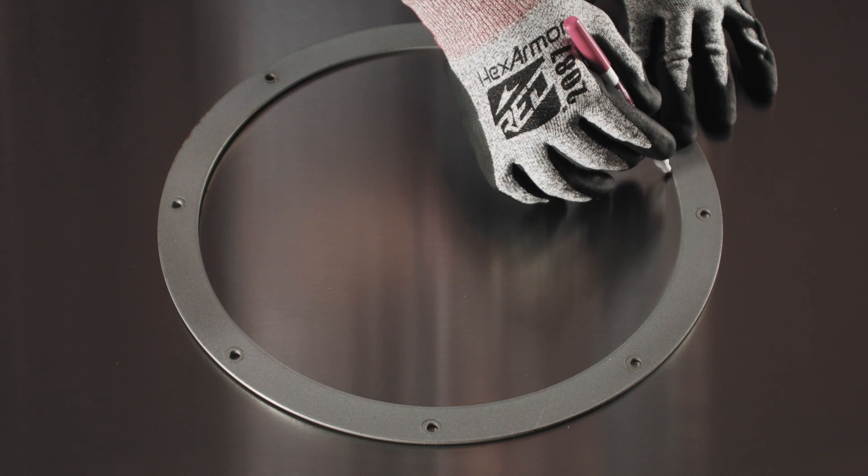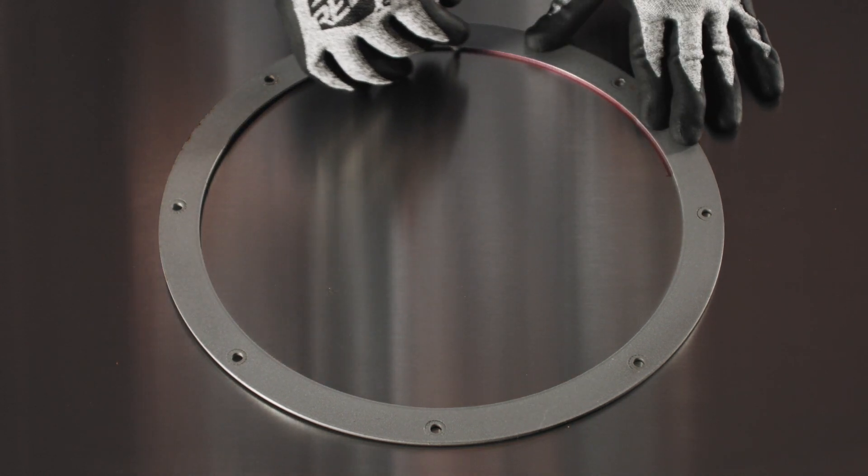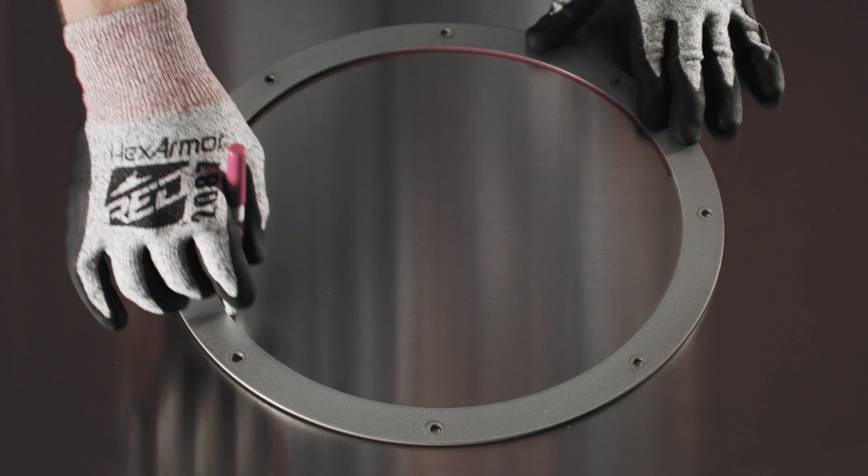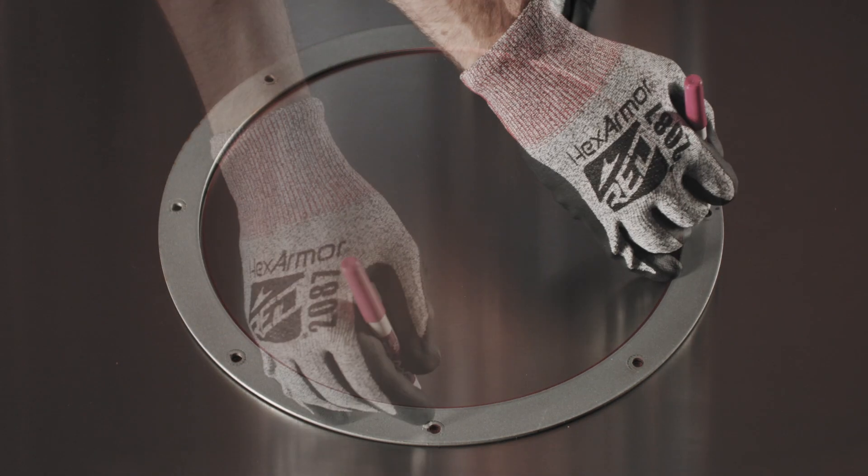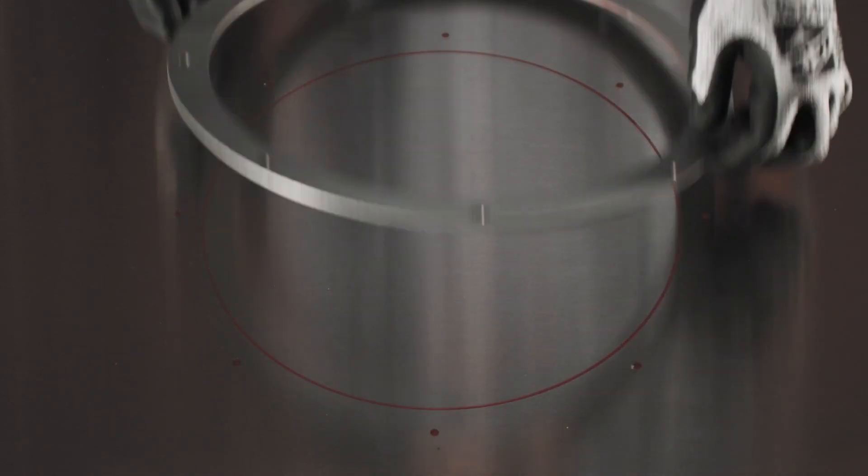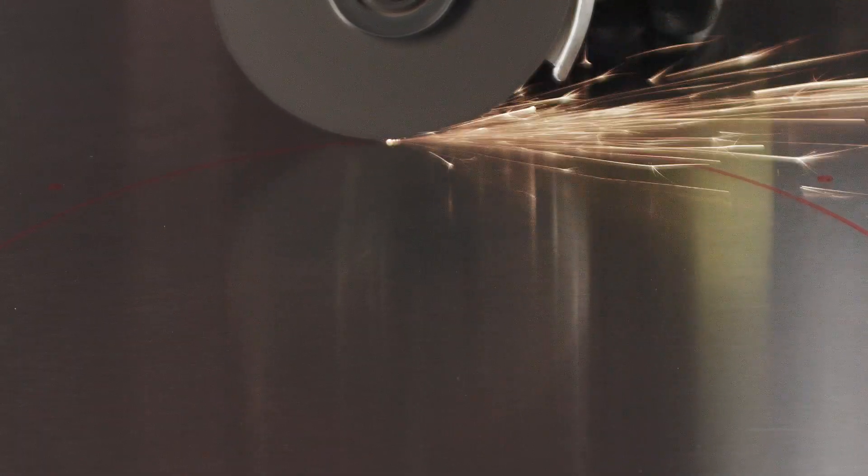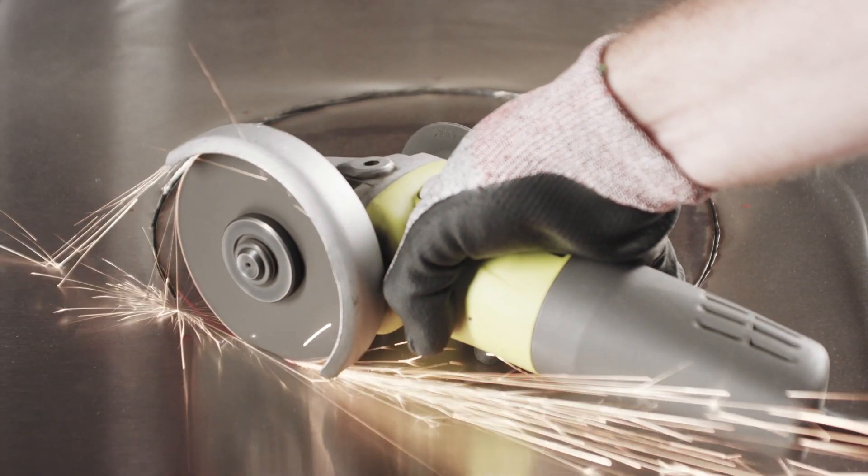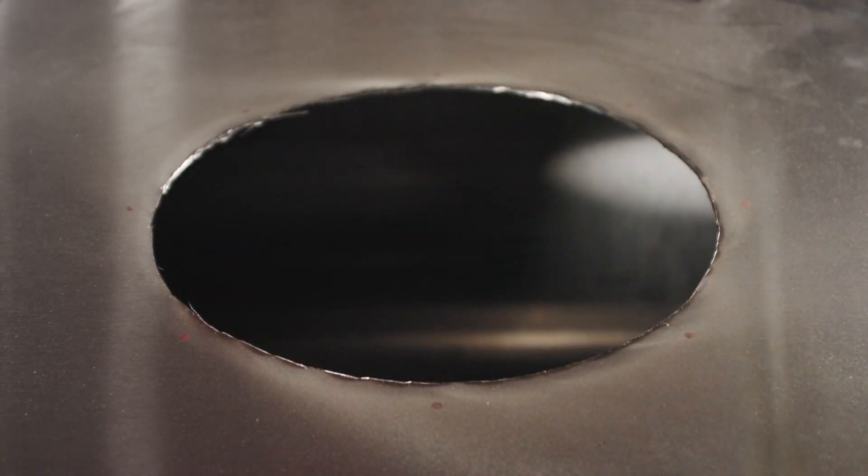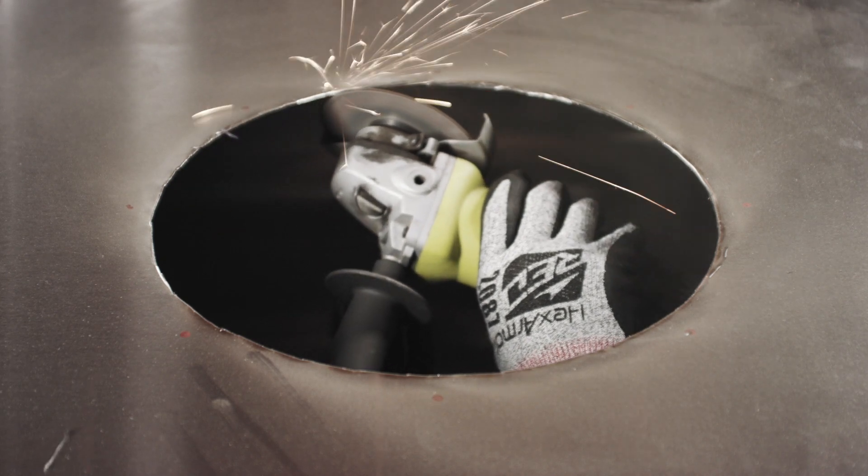Since the riser will be bolted on, a bolt hole circle is required. Use the loose ring as a guide to mark the inner diameter, as well as the bolt hole locations. You can now cut the plenum along the inner diameter you just marked using an angle grinder. Make sure to deburr and smooth the hole.